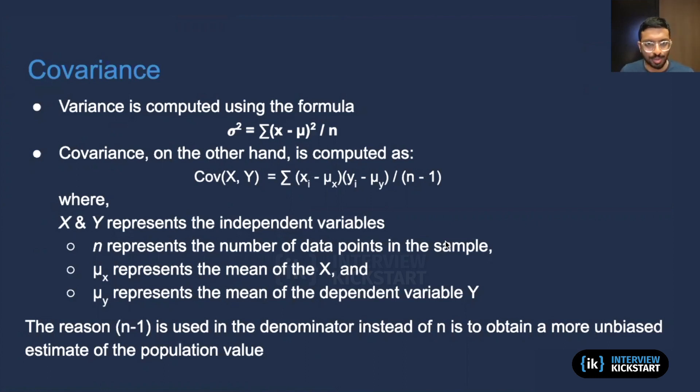For covariance, on the other hand, we compute it slightly differently. So we can see the similarities to the above formula. We see that we have (xi - μx) and (yi - μy). The reason we have both of those is we have the mean for one variable, the variable x, and we have the mean for the other variable, variable y. And then we divide this entire quantity by n minus one.